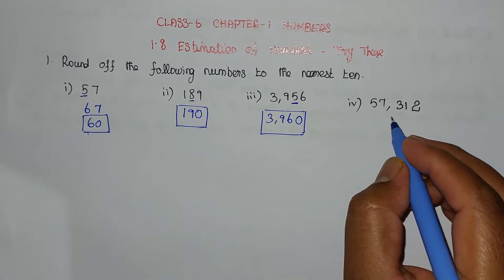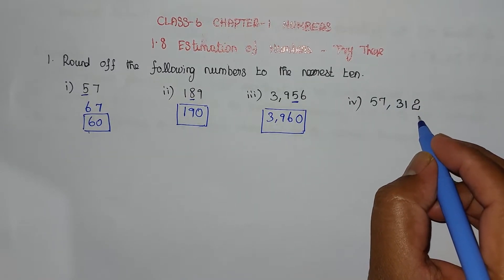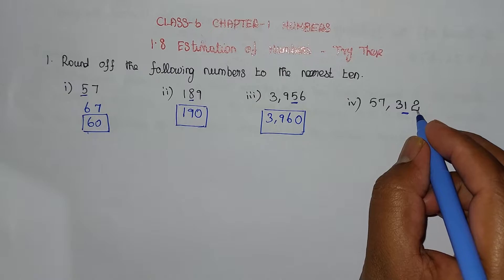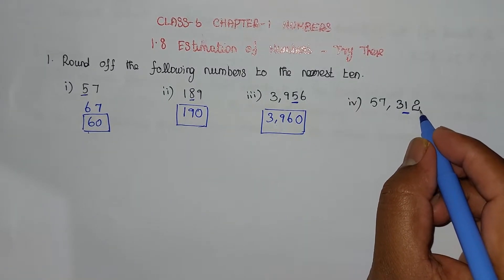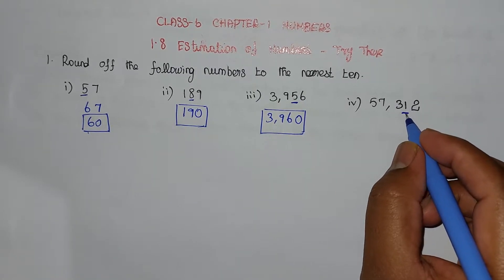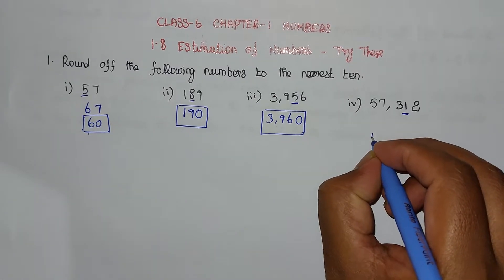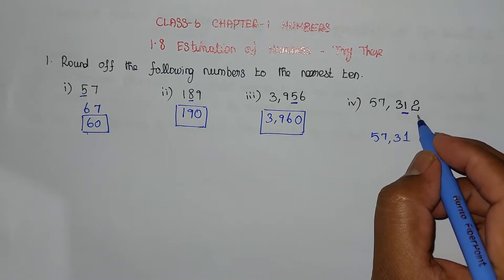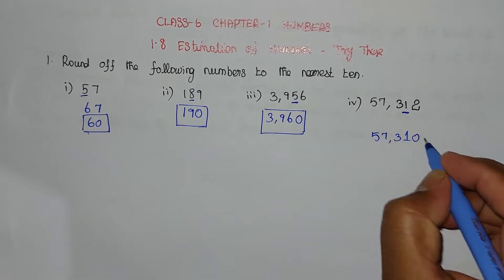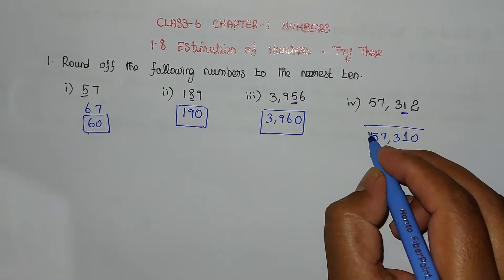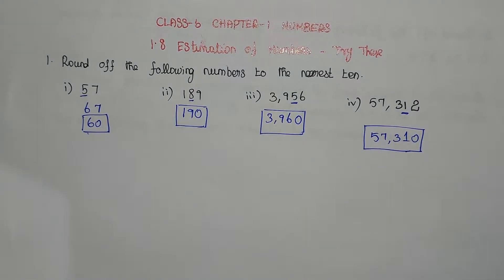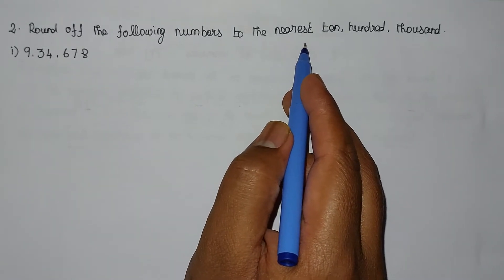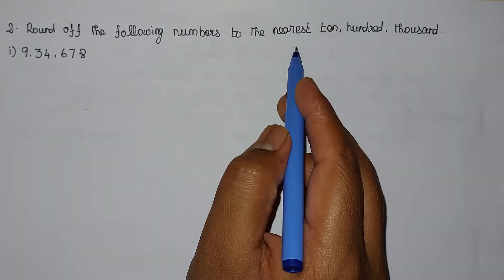Fourth problem: 57,312. Find the nearest 10 value. The 10s place digit is 1. The right-hand side digit is 2, which is less than 5. So the 10s place remains unchanged. These are the nearest rounded values.